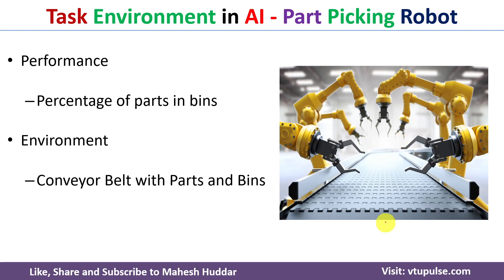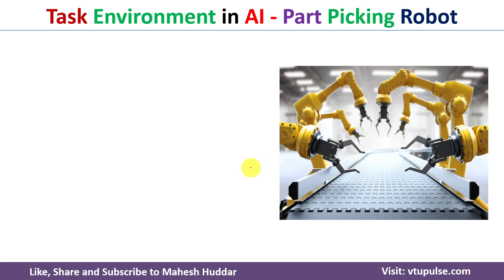The second component is Environment. The environment here consists of a continuously moving belt on which the parts are moving, along with a set of bins that are available for placing the parts.